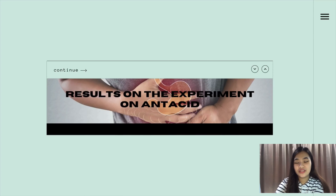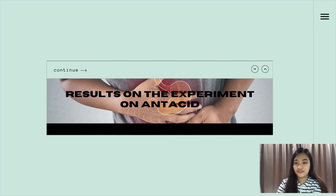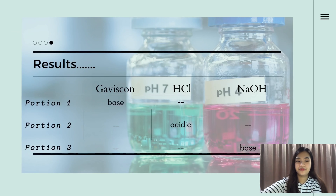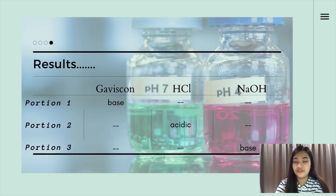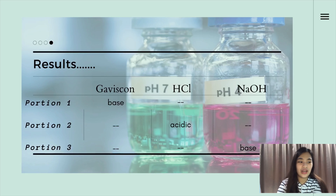For this experiment, we used Gaviscon, which is a combination of calcium carbonate, sodium bicarbonate, and alginate. This particular antacid forms a raft on top of the stomach to prevent acid from flowing back up. For portion 1, it is a mixture of water with dissolved Gaviscon alone. Its pH level is ranging from 8 to 10, and it is a violet-colored solution. Antacids are primarily bases that neutralize acids.